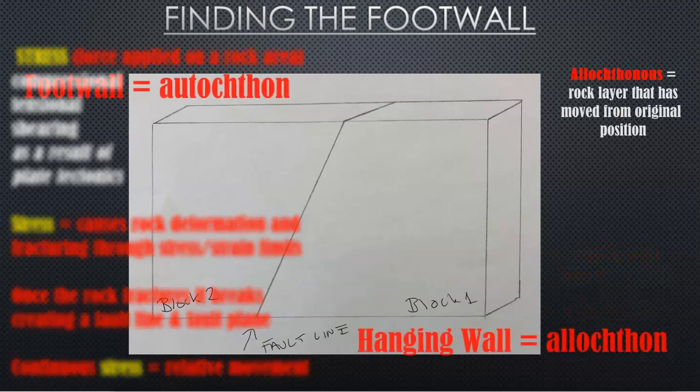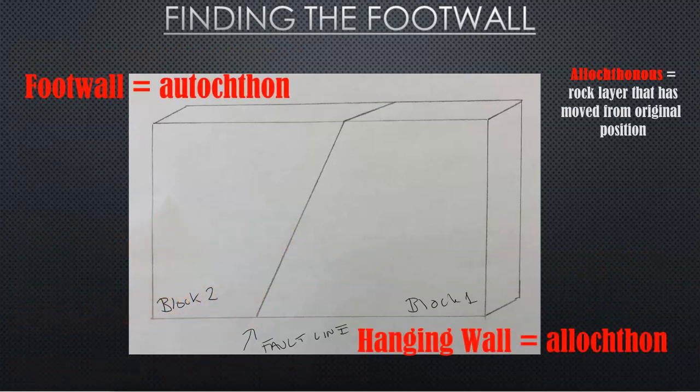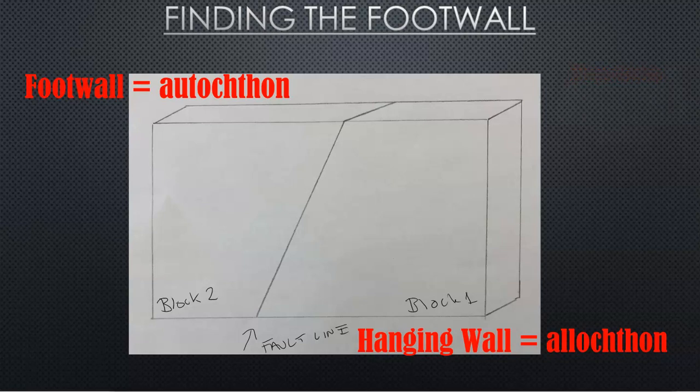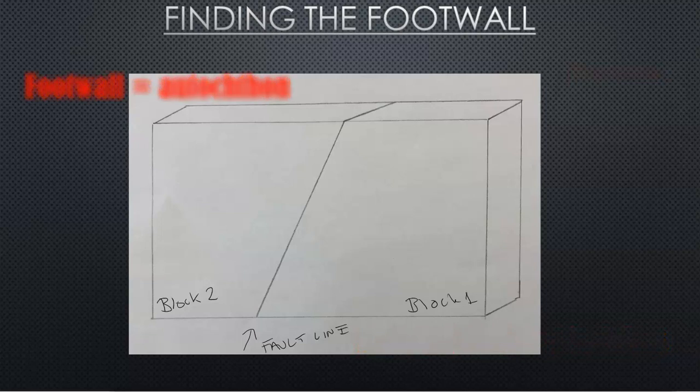So there's two terms. There's the footwall and the hanging wall. There's other terms we can use, which is allocthon, which is the hanging wall, and the autochthon, which is the two different variations of which one's which. Footwall is the autochthon and that's going to be the one that's in place originally.